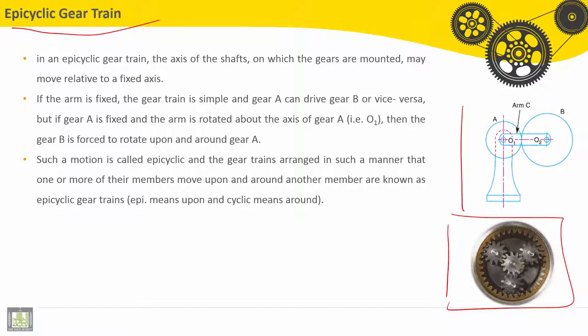I will present here in this part some features about an epicyclic gear train. In an epicyclic gear train, the axis of the shaft on which the gears are mounted may move relative to a fixed axis. We can see here this axis is moving, rotating around the main axis here.